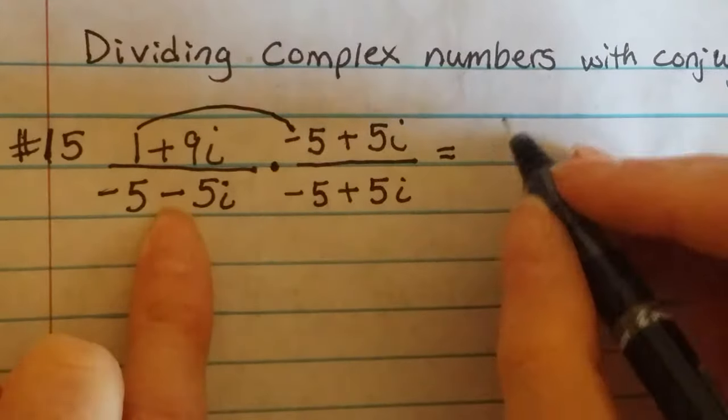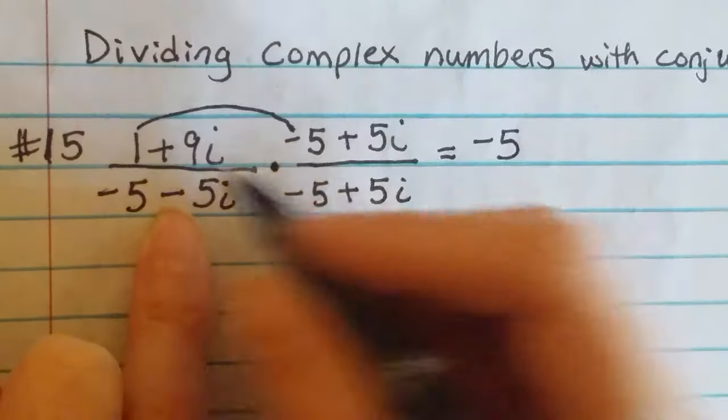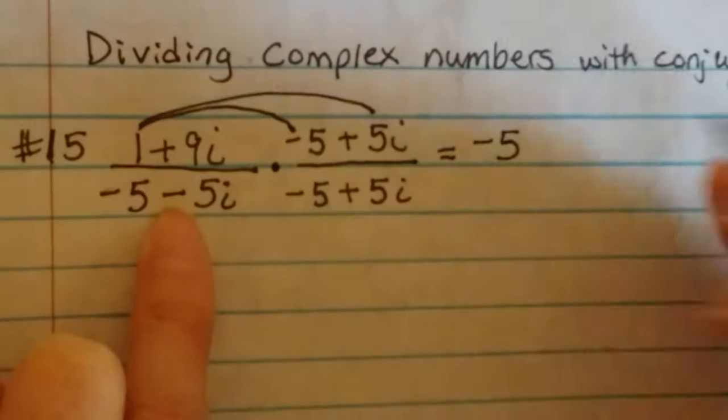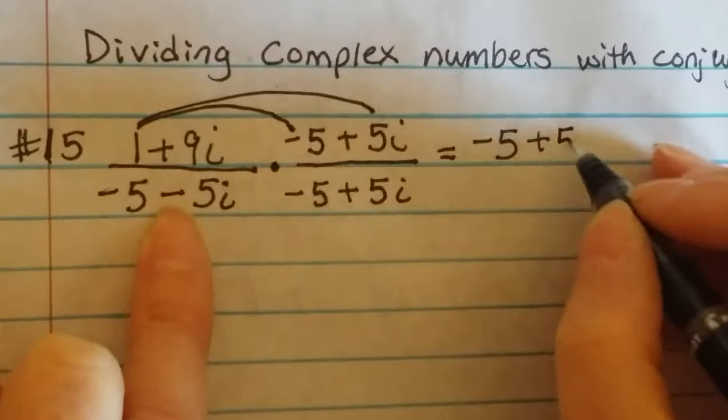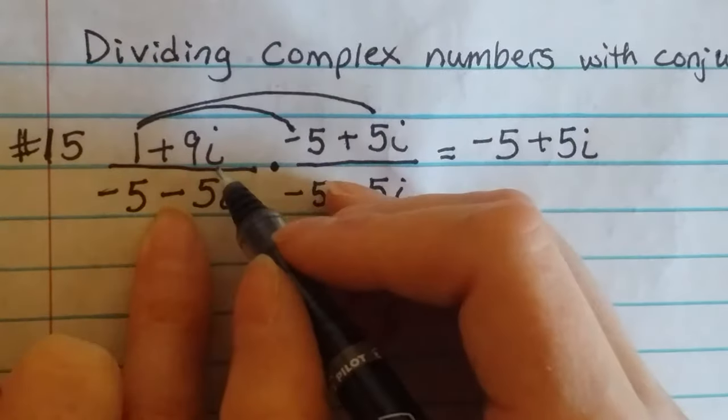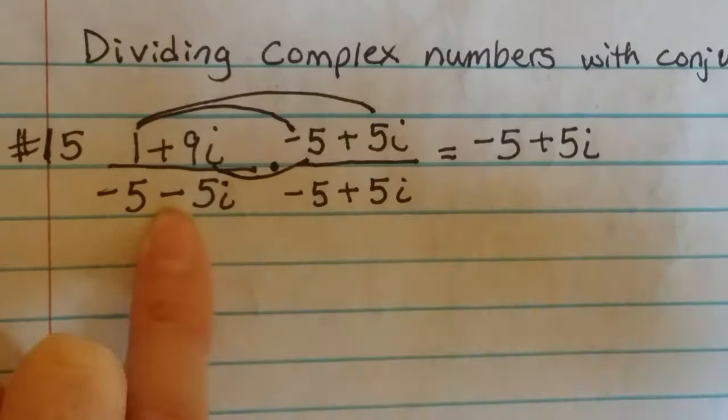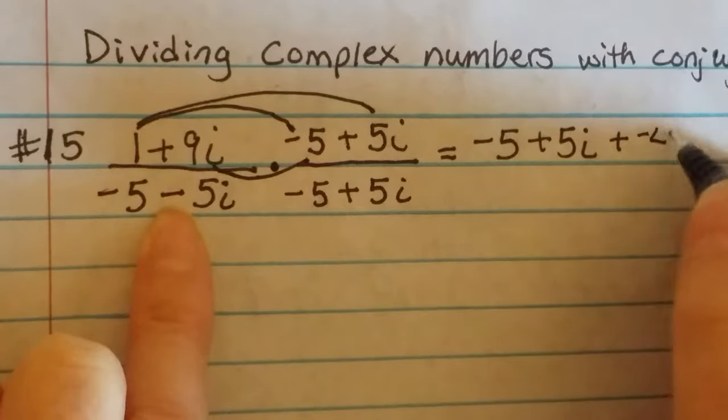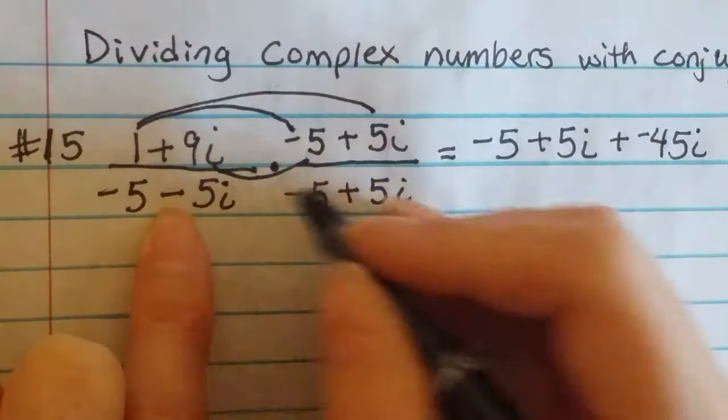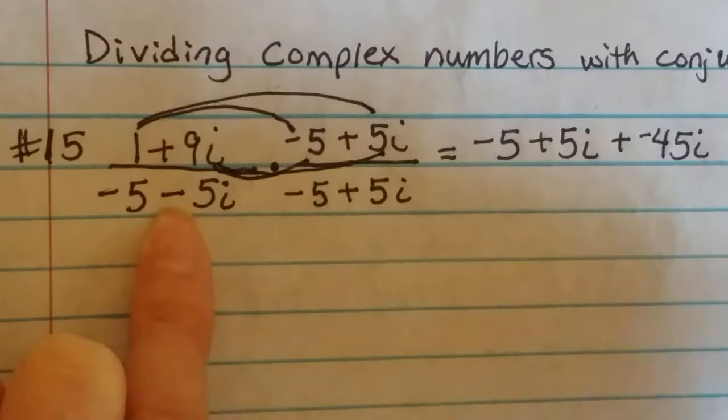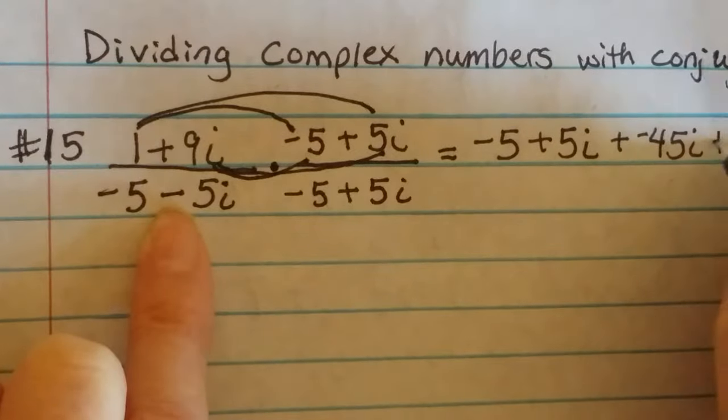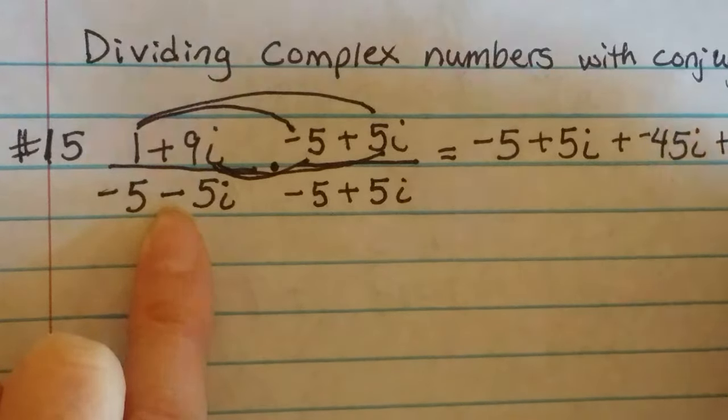So 1 times -5 is -5. 1 times 5i is 5i. 9i times -5 is -45i. 9i times 5i is 45i².